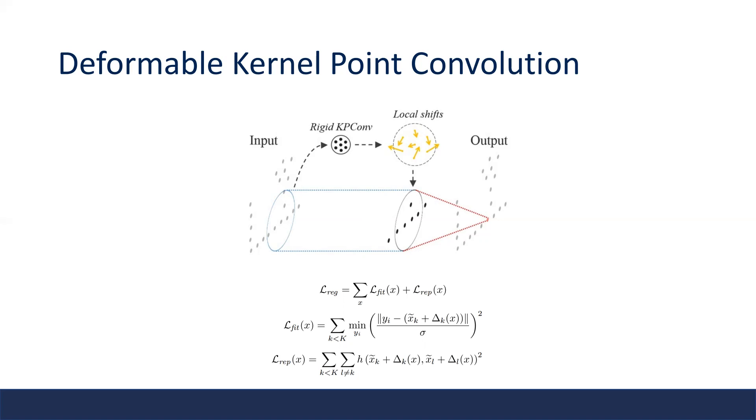To overcome this issue, the authors propose two additional regularization terms to the final objective function. The first is a fitting term, which encourages the kernel points to fit the input data points, therefore better capturing local shape. The second is a repulsive term, which discourages different kernel points to go to the same position, therefore generating more diverse kernels. After adding these two regularization terms, these local offsets can be successfully learned.